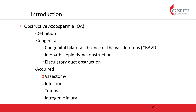OA may be either congenital or acquired. Congenital obstructions include congenital bilateral absence of the vas deferentia, or CBAVD, idiopathic epididymal obstruction, and ejaculatory duct obstruction. Acquired causes include vasectomy, infection, trauma, and iatrogenic injury.